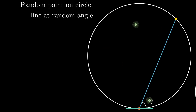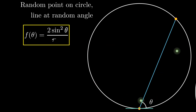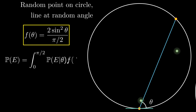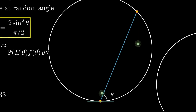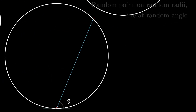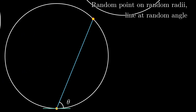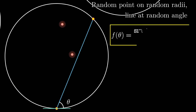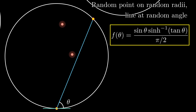If we randomly choose a point on the circle and draw a line at a random angle, the probability is surprisingly 1/3, like what we would expect from a linear case. Lastly, choosing a random point from a random radius and then drawing a line at a random angle to create the chord, we get a very hard integral that evaluates to about 0.386.